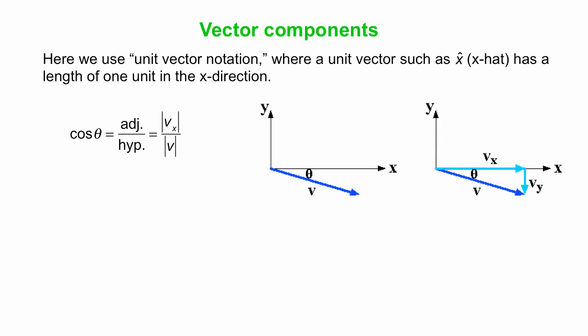Okay, so to find Vx we can use our equation cosine theta is adjacent over hypotenuse, that's for a right angle triangle. In this case, the adjacent is Vx, and we're just doing magnitudes, and the hypotenuse is V. Okay, so we rearrange and solve for Vx. Vx, the magnitude of it is just V cosine theta, but the full vector is V cosine theta in the positive x direction, so we add plus x hat to that.